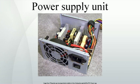As transistors become smaller on chips, it becomes preferable to operate them on lower supply voltages, and the lowest supply voltage is often desired by the densest chip, the central processing unit. In order to supply large amounts of low-voltage power to the Pentium and subsequent microprocessors, a special power supply, the voltage regulator module, began to be included on motherboards.